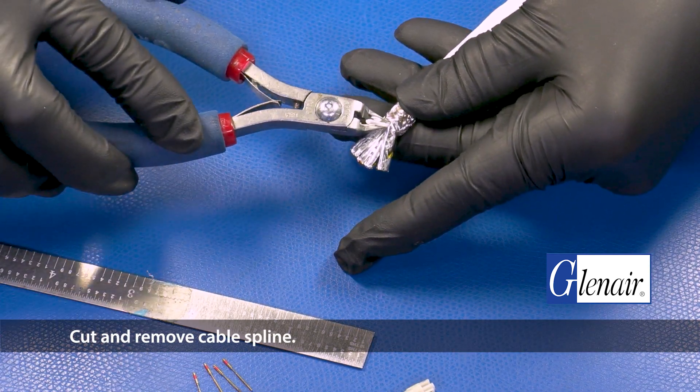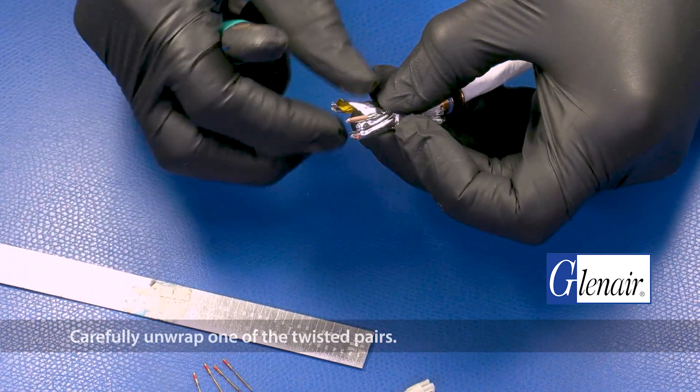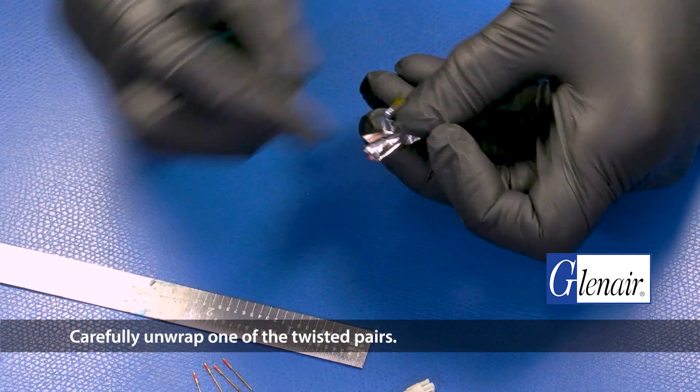Cut and remove cable spline. Carefully unwrap one of the twisted pairs.